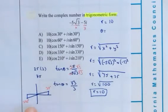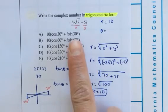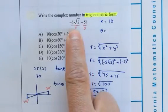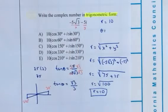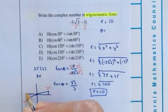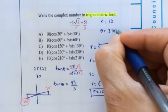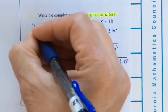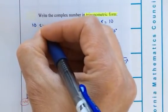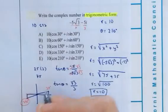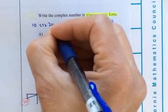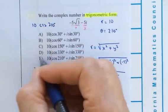And to decide which of those two angles we are using: both x and y are negative. So if I plot it, it will be negative to the left and negative down. So it will be 210 degrees. So we can write it as 10 cosine 210 degrees plus i sine 210 degrees. So therefore your answer is letter E.